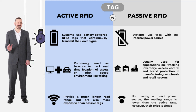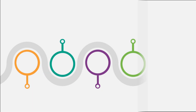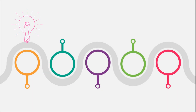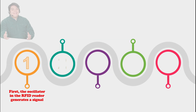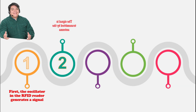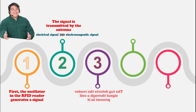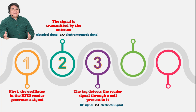For the battery: it is only used in active devices to power up the microchip. For a passive tag, the battery is not used. In communication, the oscillator in the RFID reader generates a signal which is amplified to propagate over a longer distance, then transmitted by the antenna as an electromagnetic signal.